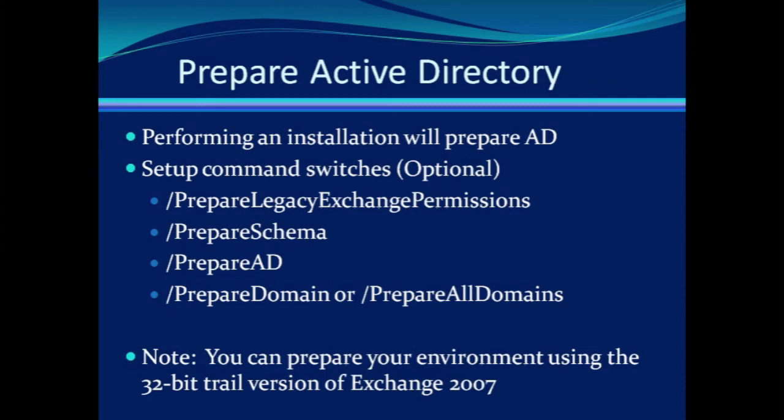It's good to note that if you're trying to prepare your environment and you don't have your 64-bit server in place just yet, you can still perform the changes by using the 32-bit trial version of Exchange 2007. You can use this to prepare Active Directory, and then when you actually have your server in place and you're ready to do your installation, the Active Directory is already prepared.